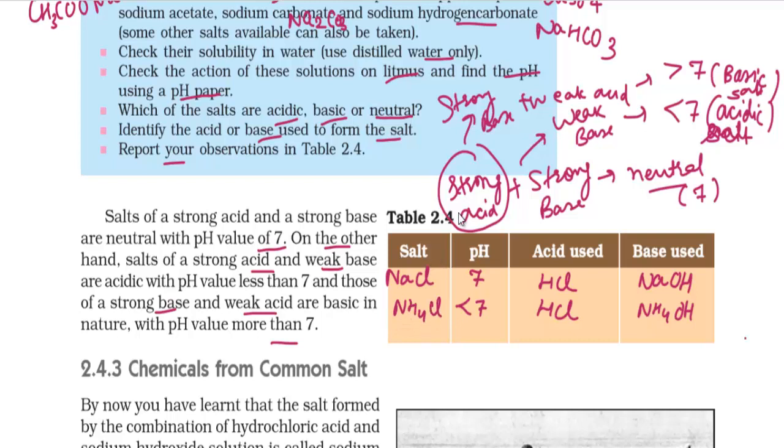And last case, there will be strong base. Strong base is NaOH, and what will be weak acid? For example, H2CO3. H2CO3, carbonic acid, this is very weak acid.